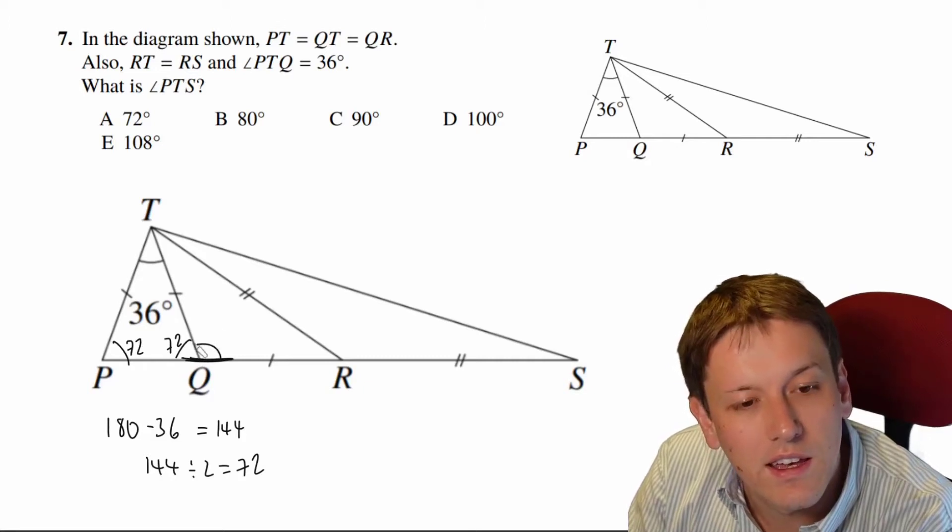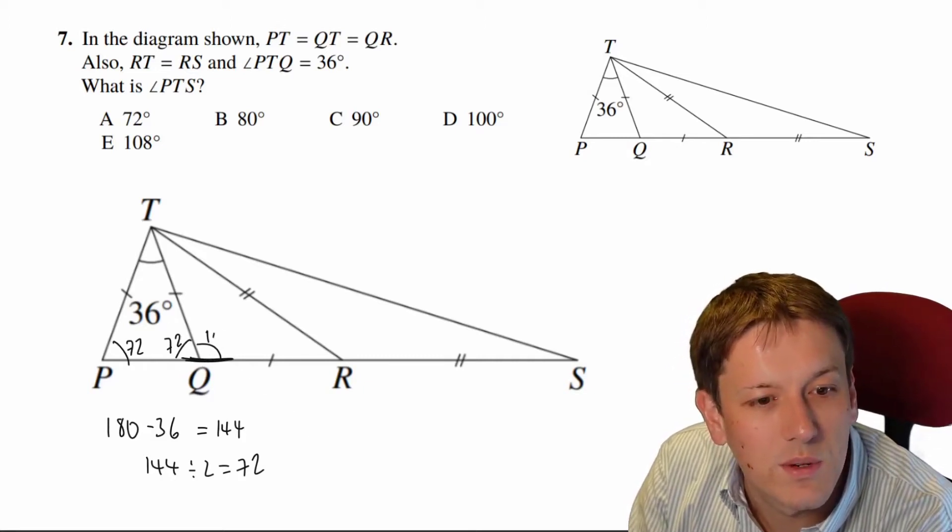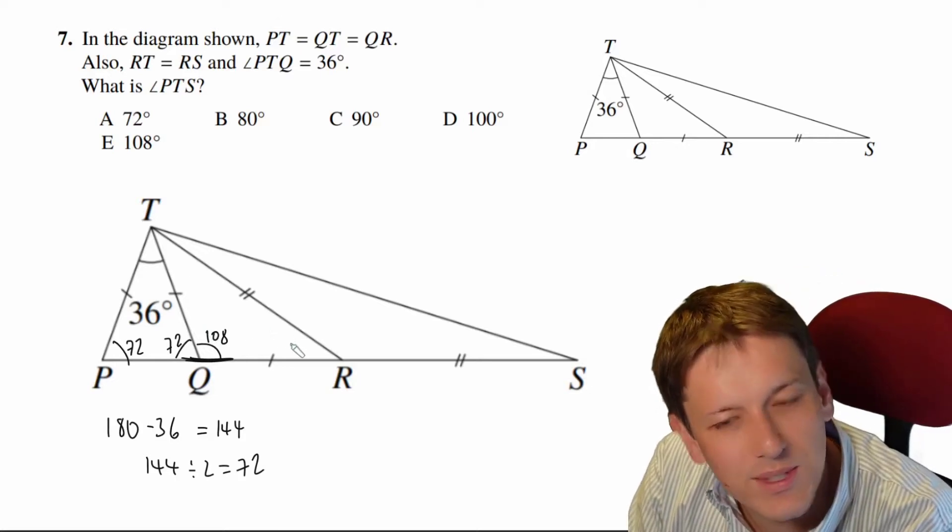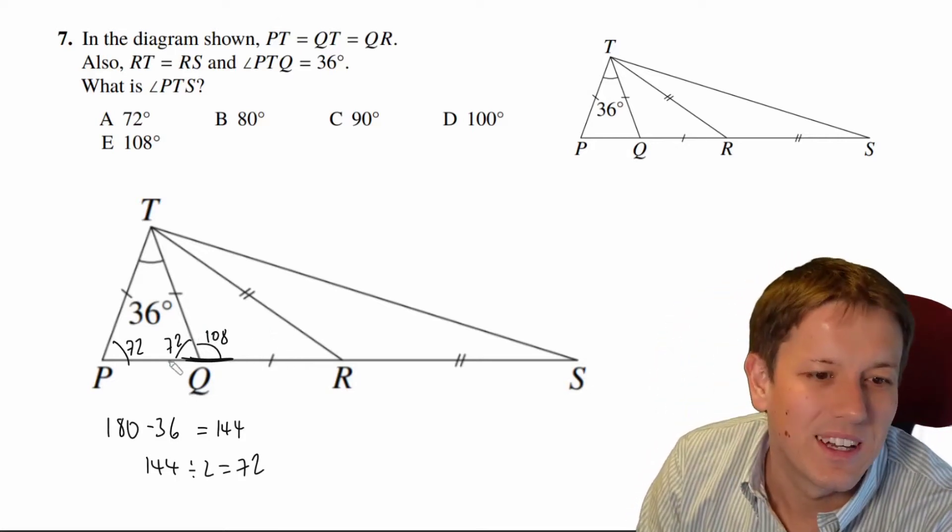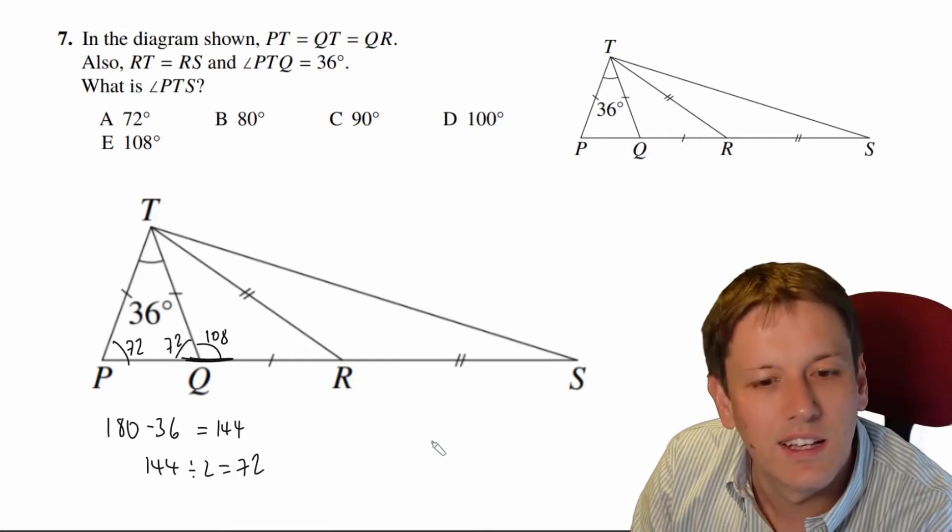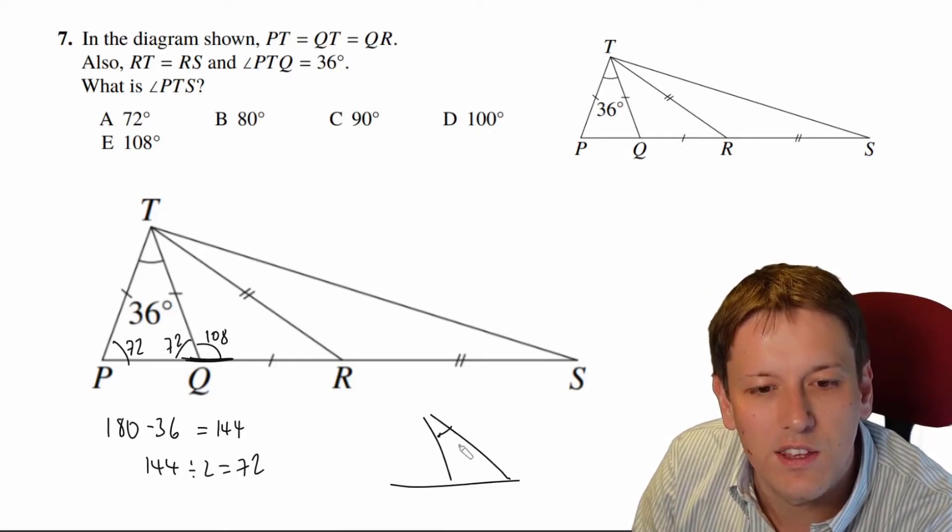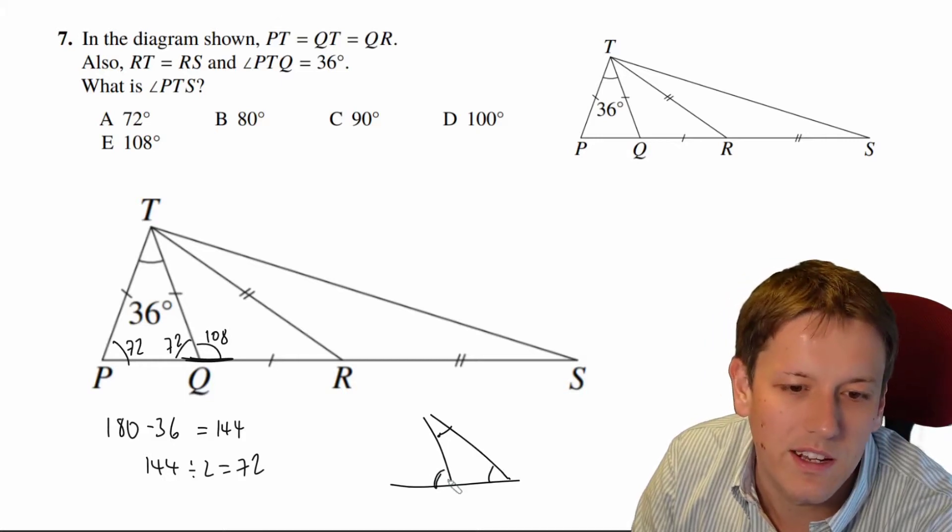Then I've got angles on a straight line here, so 180 minus 72 is 108. And actually that also means that the other two angles in this triangle add up to 72 as well. That's that nice case of the result that if you have a triangle with a straight line, you know these two angles always add up to the same as this one.